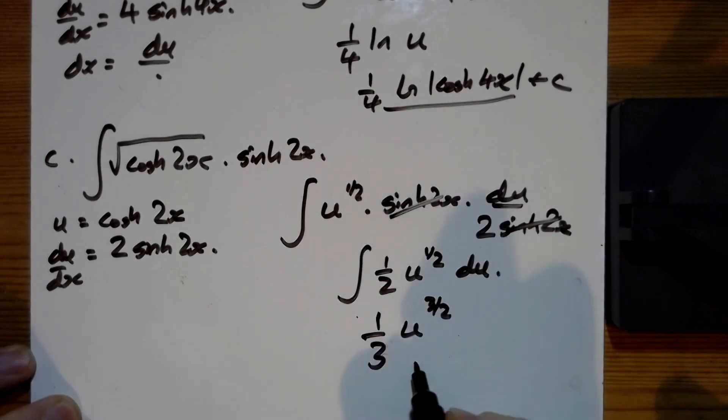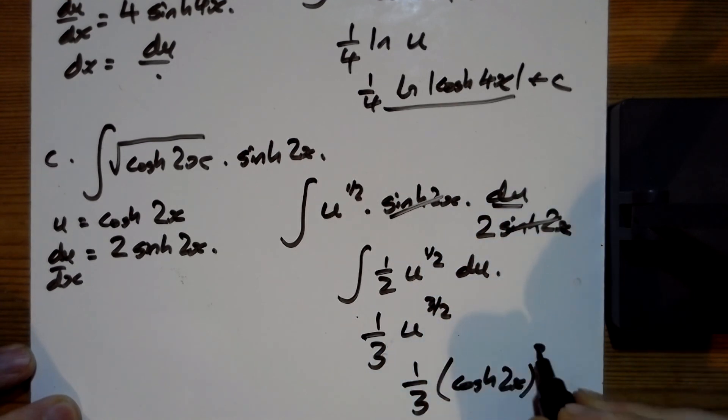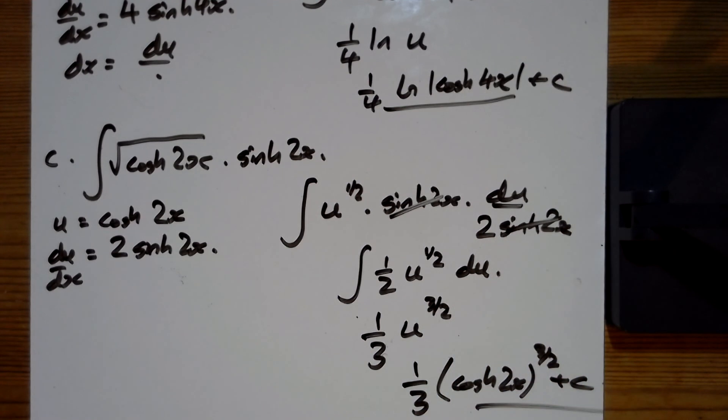So final answer, one third of cosh two x to the power of three over two, plus the c on the end there. Keep remembering those when pressed.